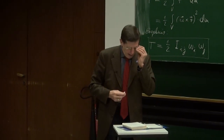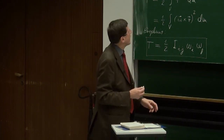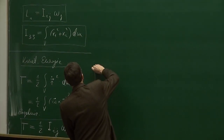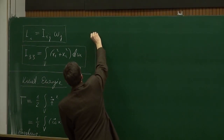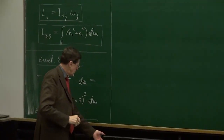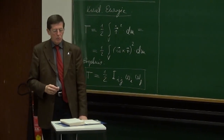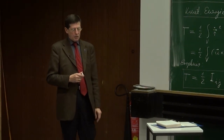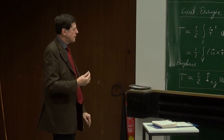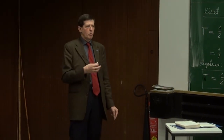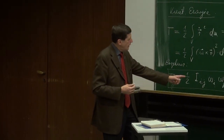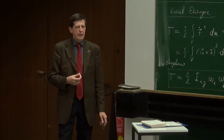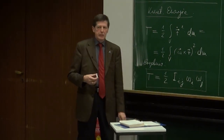Wir werden gleich anschließend Beispiele betrachten, wo Sie sehen werden, dass diese allgemeinen und im allgemeinsten Fall doch etwas umständlichen Beziehungen sich sehr vereinfachen, wenn man spezielle Situationen betrachtet. Ich möchte nur noch betonen, dass man anhand dieses Ergebnisses für die kinetische Energie eines rotierenden starren Körpers erkennen kann, dass für eine Rotation um eine allgemeine Drehachse wirklich alle diese einzelnen Elemente des Trägheitstensors auch wirklich zu dieser kinetischen Energie beitragen, weil ja über alles summiert wird.